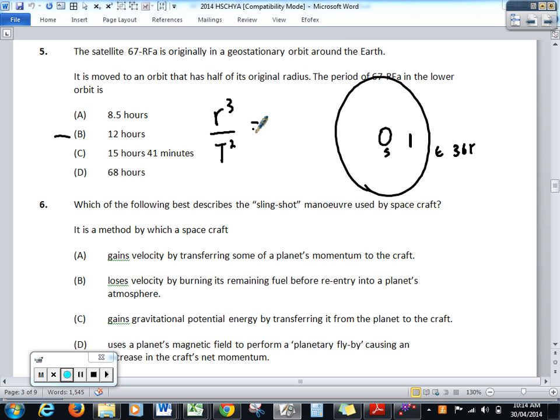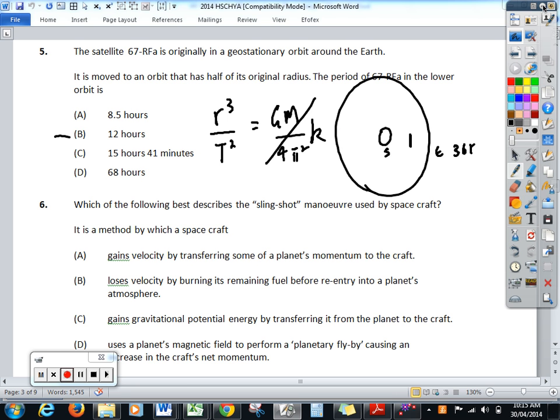A equals gm on 4 pi squared, which we know is a constant because it's around the same object. So, let's work out how would I go about doing this. Firstly, can we do it by logic? Let's do it by logic. Logic is the way I wanted you to do it. Can it be 12 hours? Because we know that it's not real, 12 hours is rubbish. If you halve the distance of an orbit, it doesn't halve the period. In fact, it's quite a complicated cube square root ratio. Can it be longer than the original time? No.